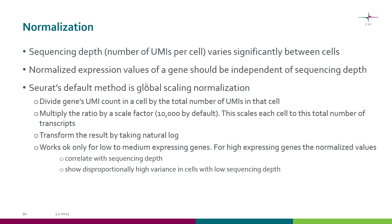Global scaling normalization then multiplies the ratio by a scale factor, which is 10,000 by default, and log-transforms the result. This works okay for genes that are expressed at low to medium levels, but for high expressing genes, the normalized values still correlate with sequencing depth. They also show disproportionately high variance in cells with low sequencing depth.